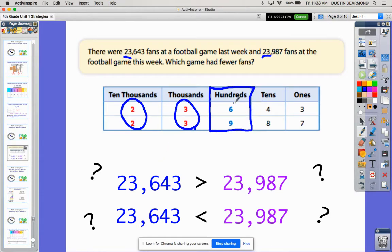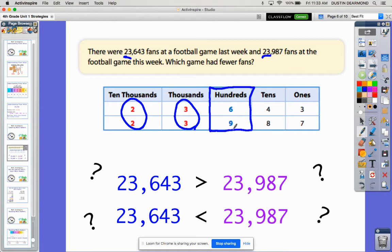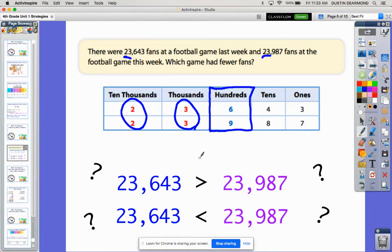If I think about just the hundreds place, 600 and 900—if I think back to my place value blocks, if I have six of the square blocks representing 600 or nine of the square blocks representing 900, then I know that 900 is more than 600. So therefore this number right here on the bottom is our larger number, and this is our smaller number.